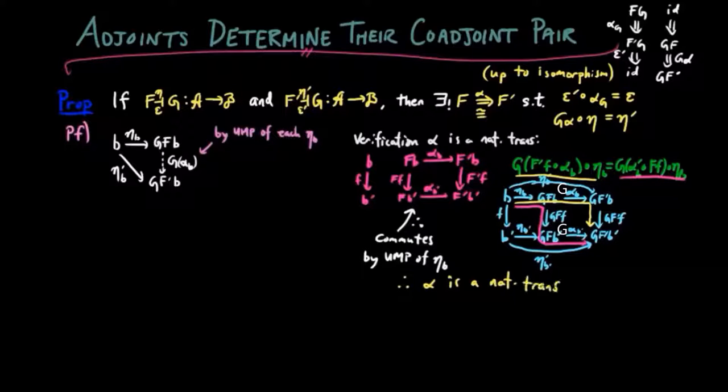Therefore, alpha is a natural transformation. We construct the inverse to alpha by symmetry. In other words, we switch the roles of eta and eta prime in the previous argument. Then alpha is necessarily an isomorphism by the universal property of eta and eta prime.